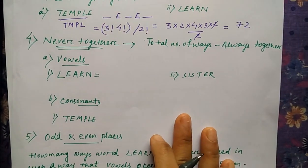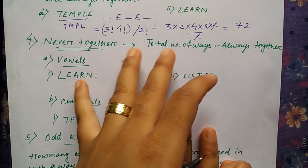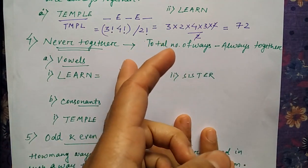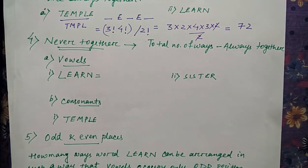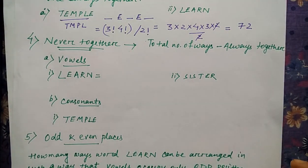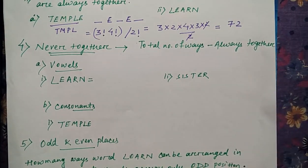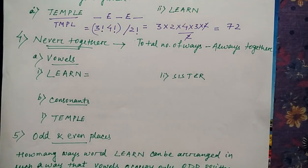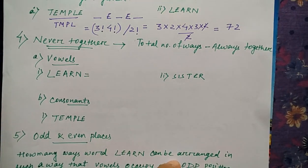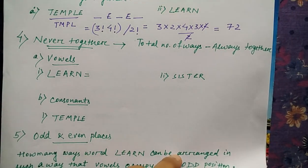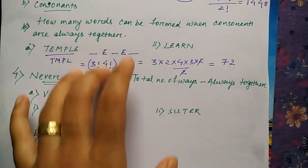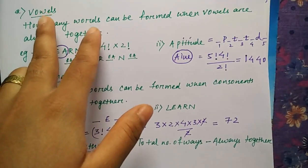You have to understand it very clearly that learn is a vowel word. So how can you arrange them where the vowel should never be together? So to know never be together, you can easily know that always together and subtract it from the total number of ways. Right. So we did both total number of ways also and we have done always together.